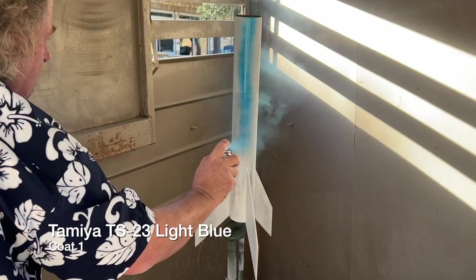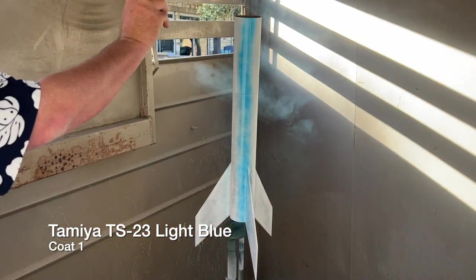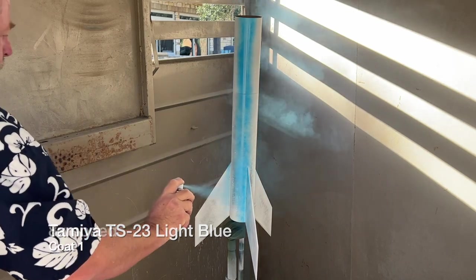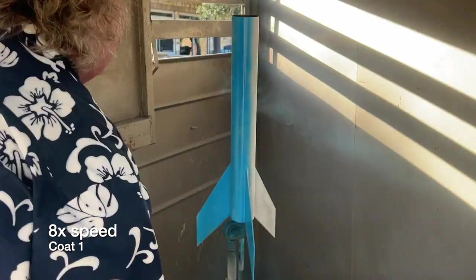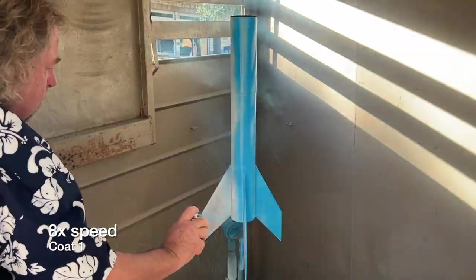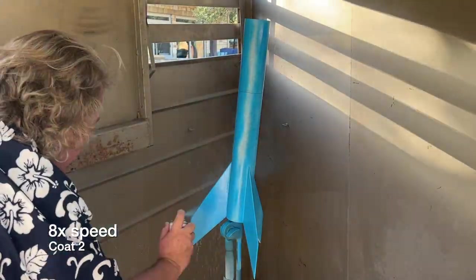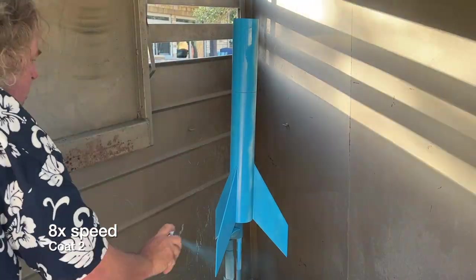The blue goes on the model using the same technique we've used throughout this video. Long strokes beginning off the model and finishing off the model. Painting the light blue on our model will use up a full two cans of the Tamiya spray lacquer.